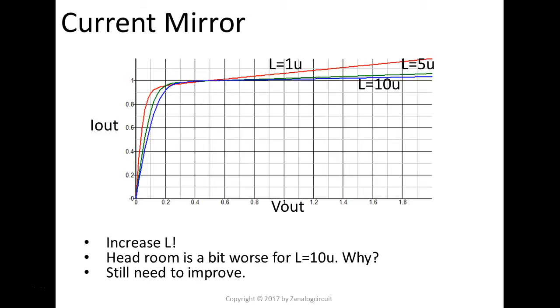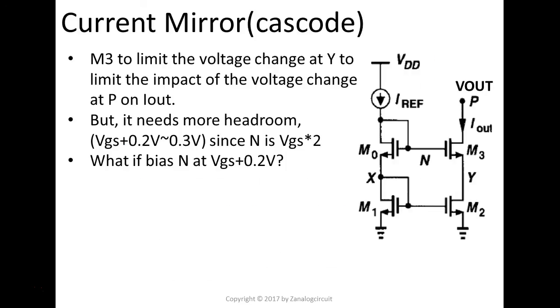Instead of using the simple topology—left or right, two transistors in total—we use cascode. Many ways to cascode the device, but this slide will show you one way to do it. Essentially, M3 and M0 stack on top of M1 and M2 as a cascode device.